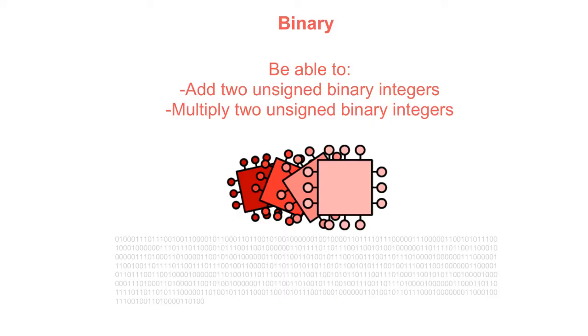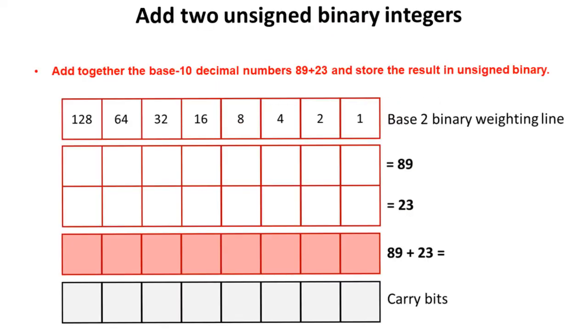In this video we're going to look at how to add and multiply together two unsigned binary integers. If you're not too sure what an unsigned binary integer is, check out our previous video. Okay, so let's start by adding together the base 10 decimal numbers 89 and 23 and store the result in unsigned binary.